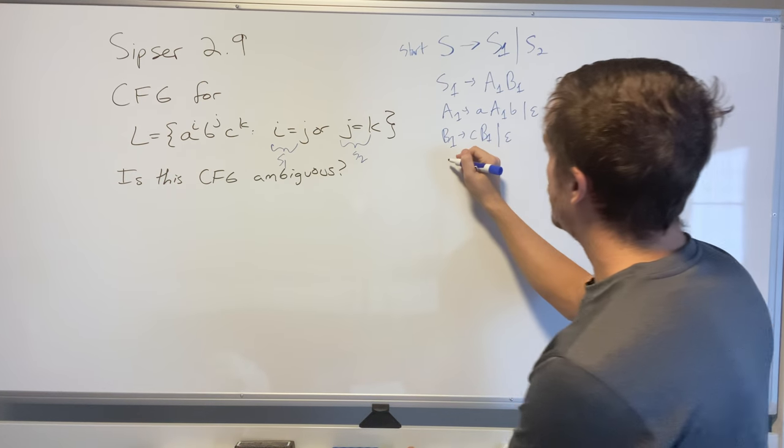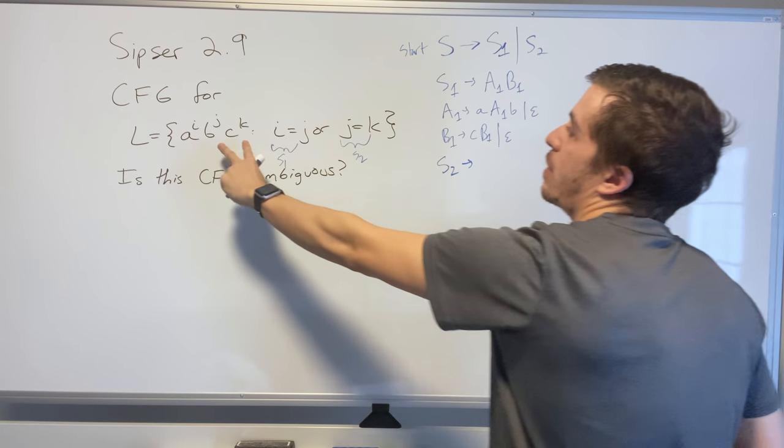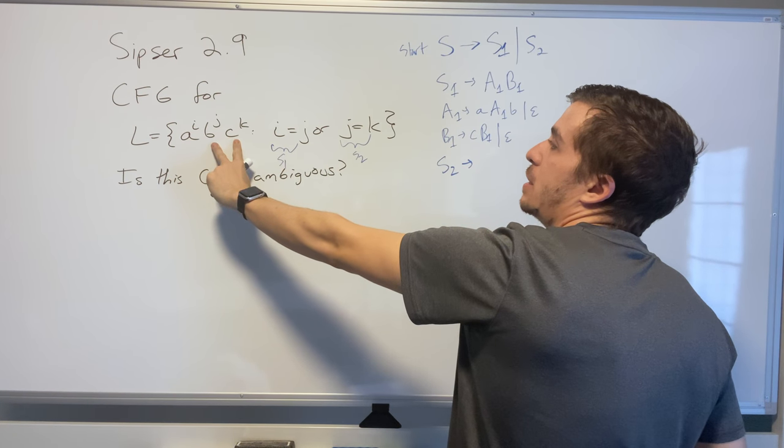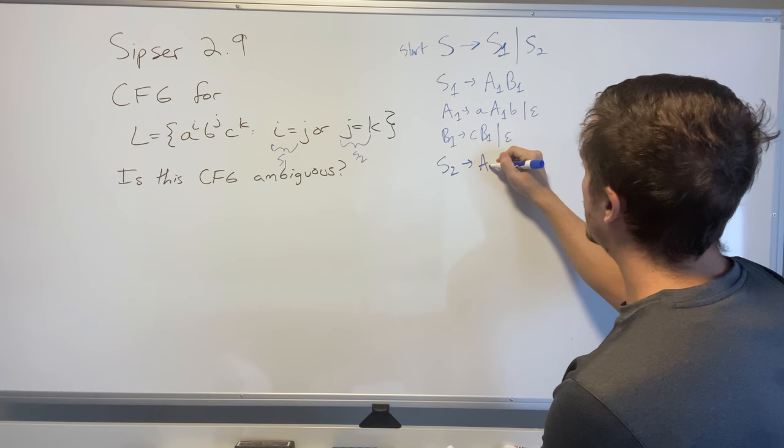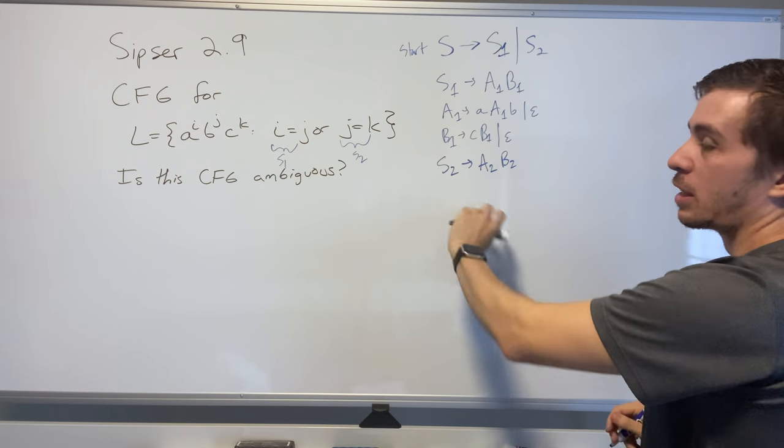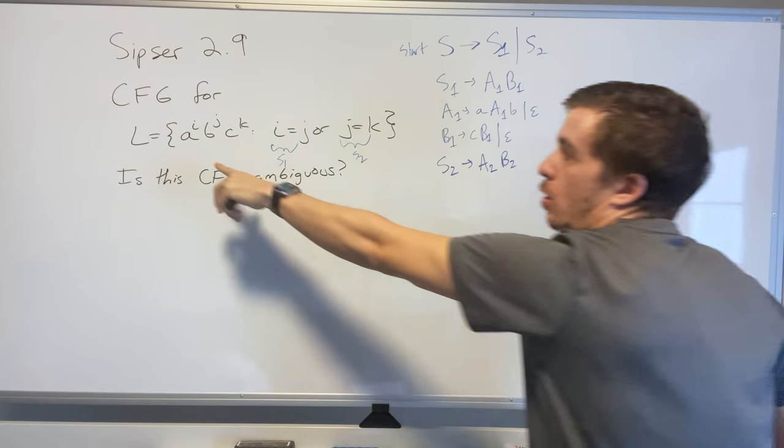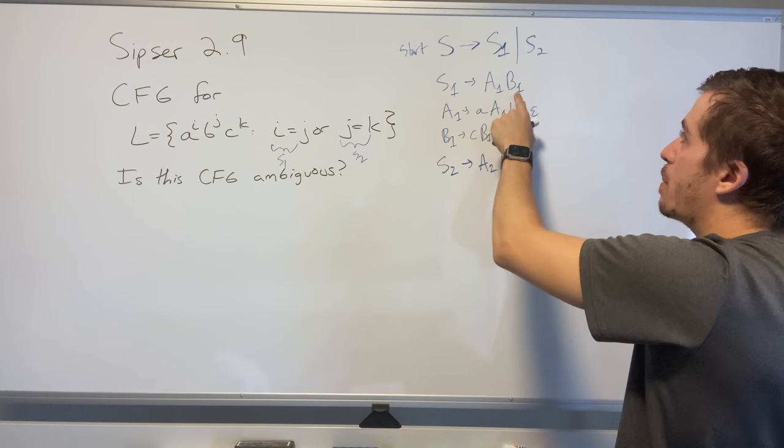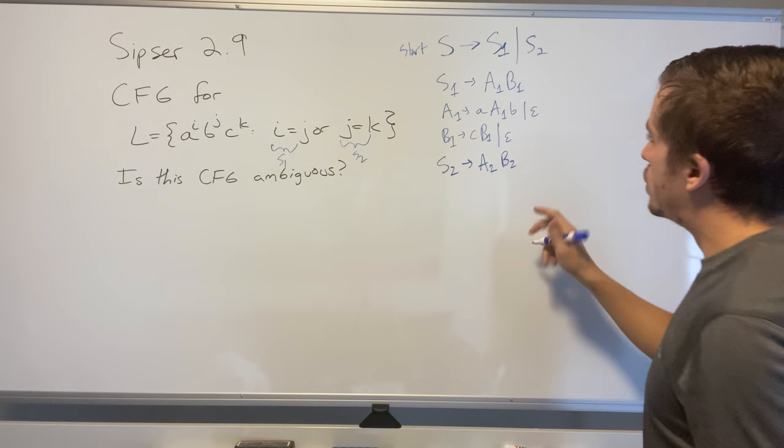All right, so now we'll tackle S2. S2 says that we have an equal number of b's and c's, so then the number of a's is irrelevant. I'm going to have two variables, A2 and B2, where A2 is going to spit out as many a's as needed because it's got to go at the front.